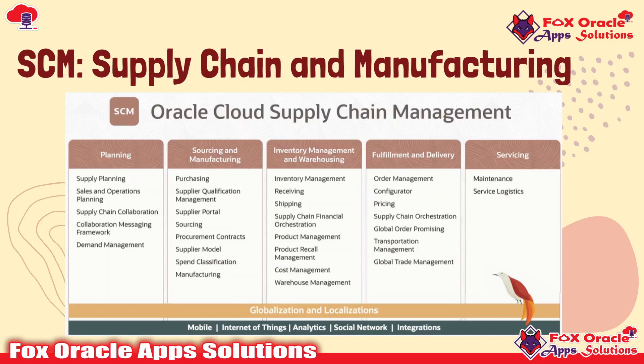Let's discuss the different modules in SCM. In Planning, we have Supply Planning, Sales and Operations Planning, Supply Chain Collaboration, Demand Management, and many more. In Sourcing and Procurement, we have Purchasing, Supplier Qualification Management, Supplier Portal, Sourcing, Procurement Contracts, Supplier Models, and Manufacturing. In Inventory Management and Warehousing, we have Inventory Management, Product Hub, Receiving, Shipping, Supply Chain Financial Orchestration, Product Management, Product Recall Management, Cost Management, and Warehouse Management. In Fulfillment and Delivery, we have Order Management with Configurator, Pricing, Supply Chain Orchestration, Global Order Promising, Transportation Management, and Global Trade Management. And finally, in Servicing, we have Maintenance and Service Logistics.